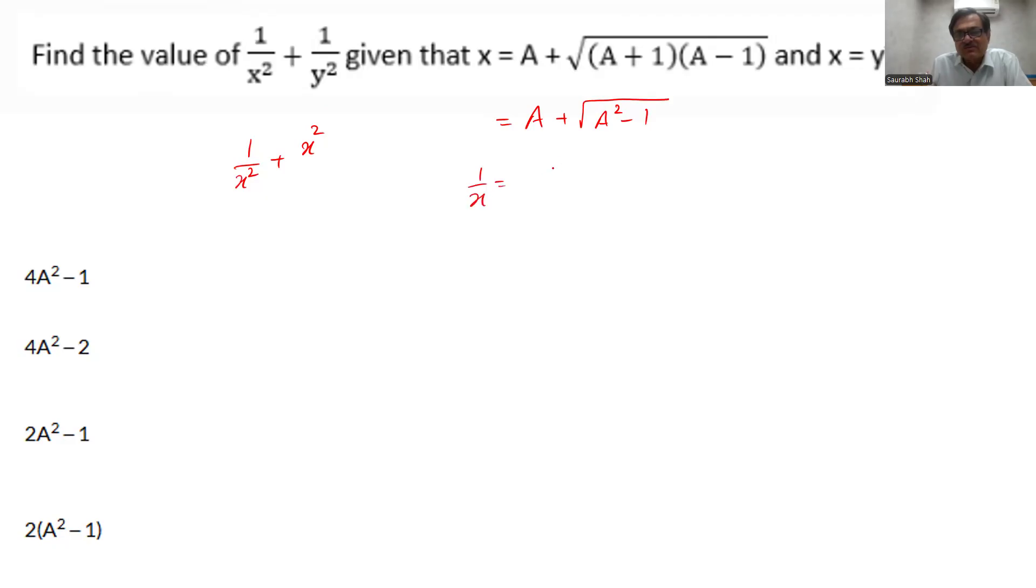Now x is given to us as this which can be simplified as a plus under root a square minus 1. So what would be 1 upon x? 1 upon x would be 1 upon a plus under root a square minus 1. Rationalize the denominator. Multiply and divide by the conjugate a minus under root a square minus 1. The numerator becomes a minus under root a square minus 1 and the denominator becomes 1. So what is x plus 1 upon x? x plus 1 upon x is equal to 2a. And this is a standard result. We remember x square plus 1 upon x square will now be simply 2a whole square minus 2, which is 4a square minus 2. The correct answer is option B.